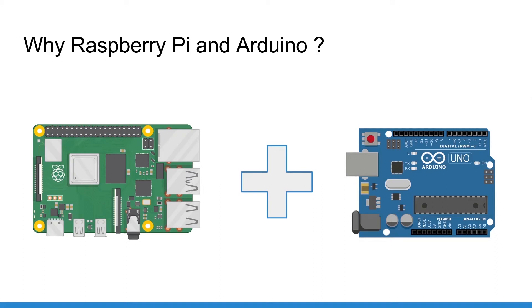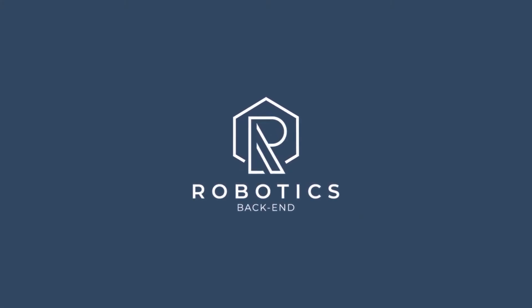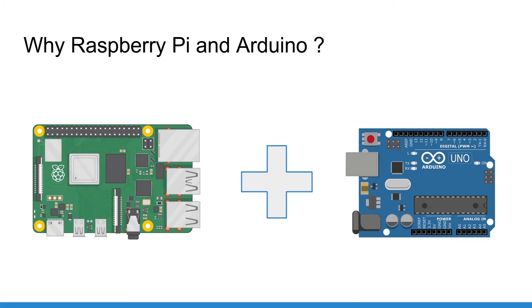In this video I will highlight some of the most important differences between Arduino and Raspberry Pi so that you can better understand when to use Arduino, when to use Raspberry Pi, and also when to use both of them in a single project. The first and maybe the biggest difference is that Arduino is run by a microcontroller whereas the Raspberry Pi is run by a microprocessor.